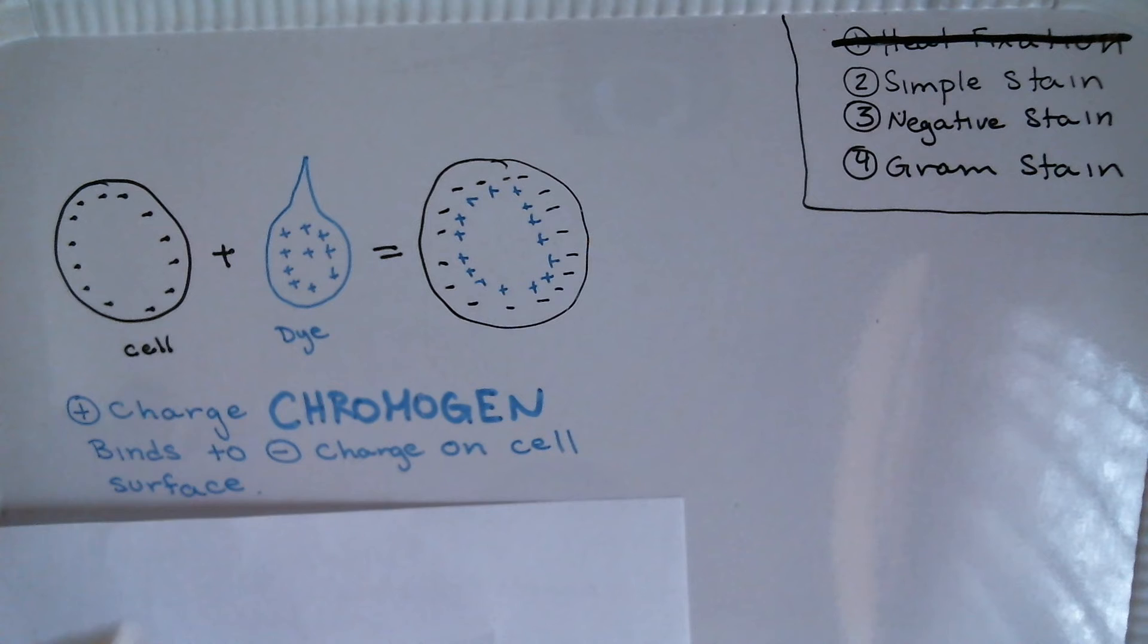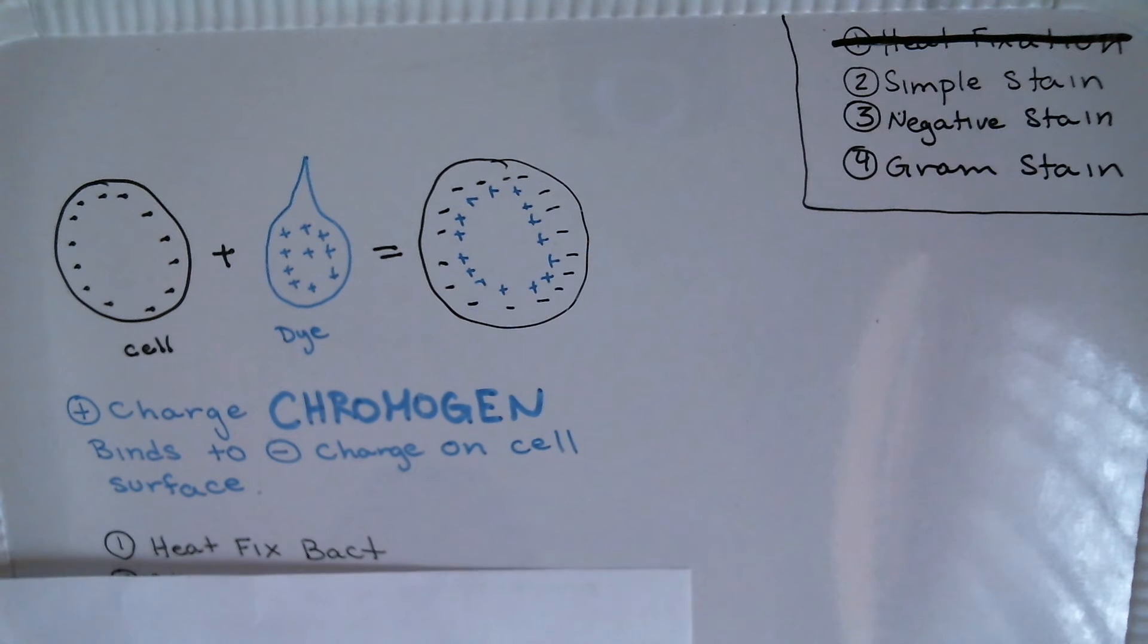The way that we do this is we'll first heat fix the bacteria onto the slide. After that we'll stain for the appropriate amount of time—it can vary depending on which stain that you actually use—and then we'll blot dry.